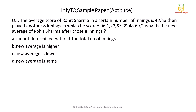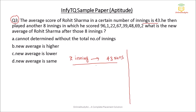Question number three: the average score of Rohit Sharma in a certain number of innings is 43. Suppose he played X innings with an average of 43. He then played another eight innings and scored: 96, 1, 22, 67, 39, 48, 69, and 2.